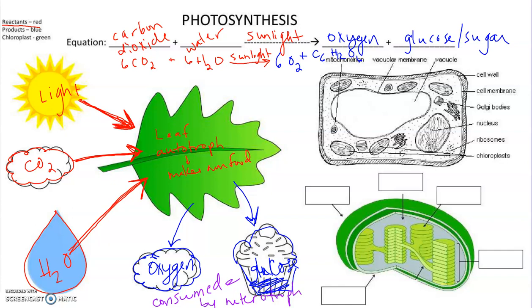Now we're going to talk a little bit about the structure of the chloroplast. Within the leaf, if we zoom in, that's what we're looking at with this picture. I'm going to grab green and color all the chloroplasts green. This large thing is our cell — remember, a plant cell is going to be rectangular — and all of these are going to be our chloroplasts. Chloroplasts are where photosynthesis takes place within a plant cell.